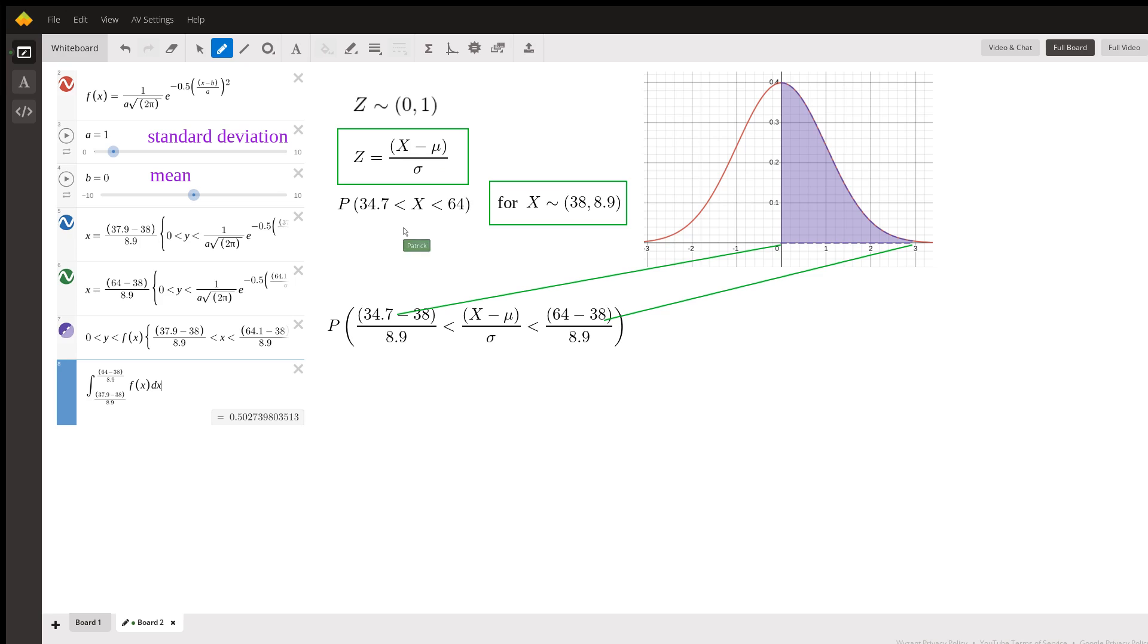It used to be that all these values for these integrals—the probability in other words—were in a table, were in a paper table, and so you couldn't have a paper table for every single possible distribution.